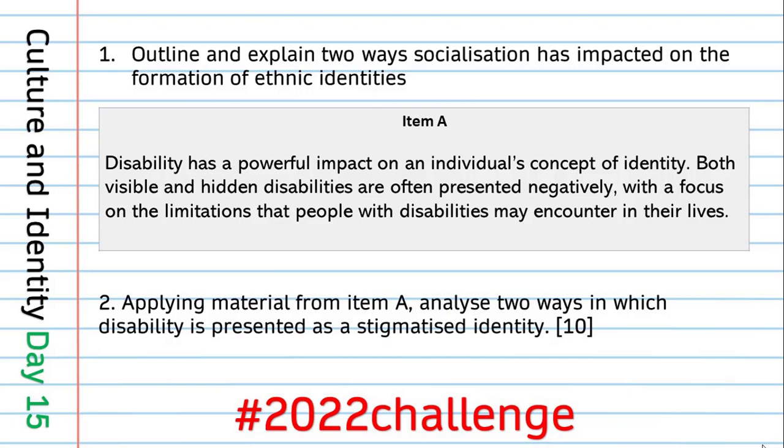We looked at these two questions set on Friday. First: outline and explain two ways socialisation has impacted on the formation of ethnic identities. Second: apply material from Item A, analyse two ways in which disability is presented as a stigmatized identity. With 'apply and analyse' questions, you always have to refer to the item — it signals to the examiner that you've read it and can use it to answer the question.